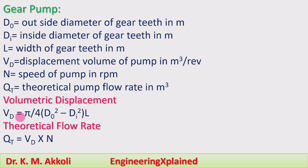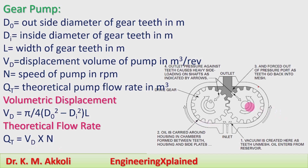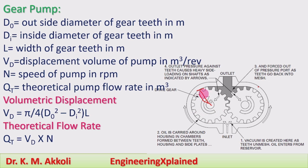The volumetric displacement is multiplied by the number of revolutions to get flow rate. D0 is the outside diameter of the gear teeth, and Di is the inside diameter. The cross-sectional area is π·D0²/4 for the outer circle, and π·Di²/4 for the inner circle, and the inner area is subtracted from the outer area.